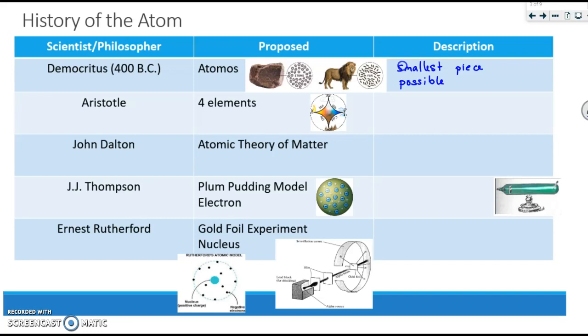Around the same time that he was suggesting this idea of atomos, Aristotle, who was a very famous philosopher, said no, this is wrong. Everything on Earth is made of four elements. And those four elements are earth, air, fire, and water. Being that Aristotle was much more well known than Democritus, this is what was believed for a very long time. In the end, it turned out he was wrong.